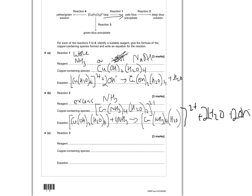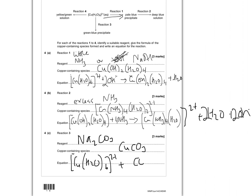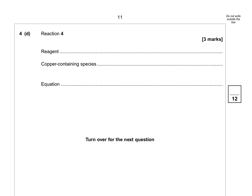Reaction 3 makes a green-blue precipitate — this is copper carbonate, so you need to add carbonate ions, ideally as sodium carbonate. The copper-containing species is CuCO₃. The equation is: [Cu(H₂O)₆]²⁺ + CO₃²⁻ → CuCO₃ + 6H₂O. Remember the carbonate ion has a 2− charge.